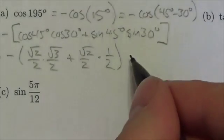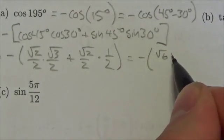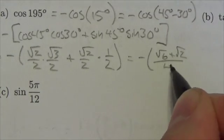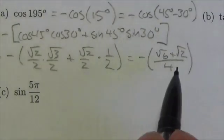Okay, so putting that together, that is going to be negative root 6 plus root 2 all over 4. Okay, and you can distribute that negative through if you want, but just understand that negative needed to be there the whole time.